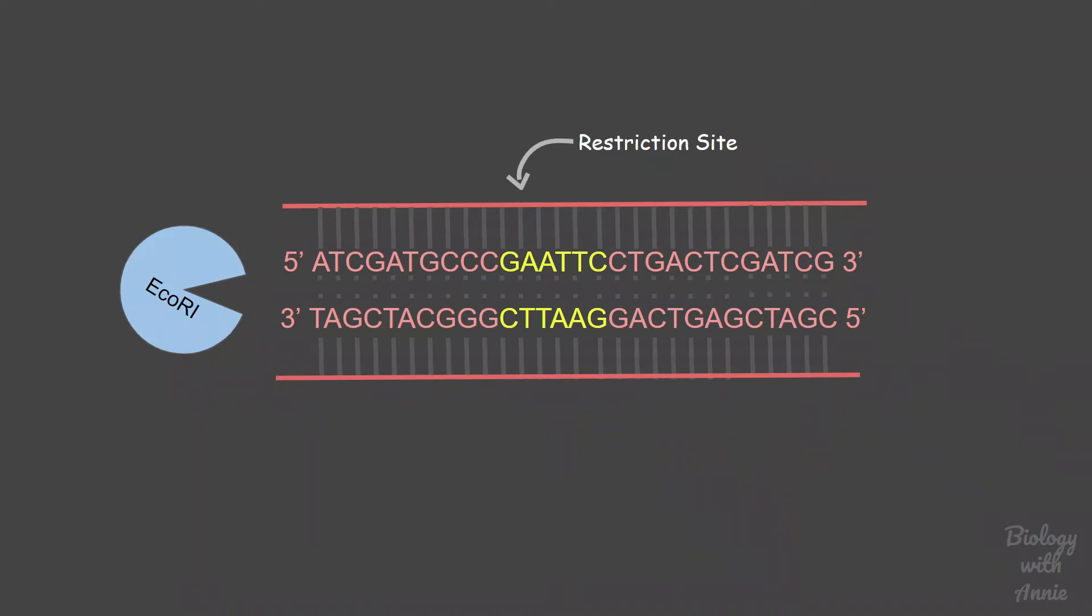Restriction sites are usually four to eight nucleotides long and are palindromic. A palindrome is a word that reads the same forward or backward. In the context of DNA sequence, what that means is that the sequence on one strand is identical to that on the other strand when read in the same orientation.